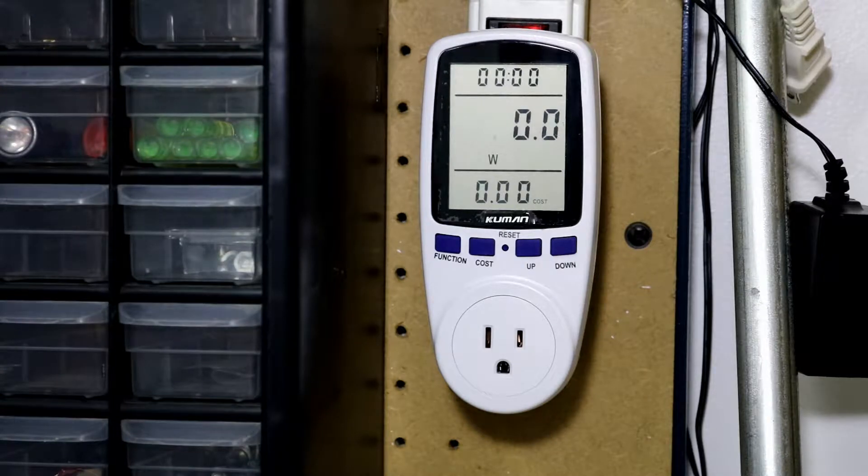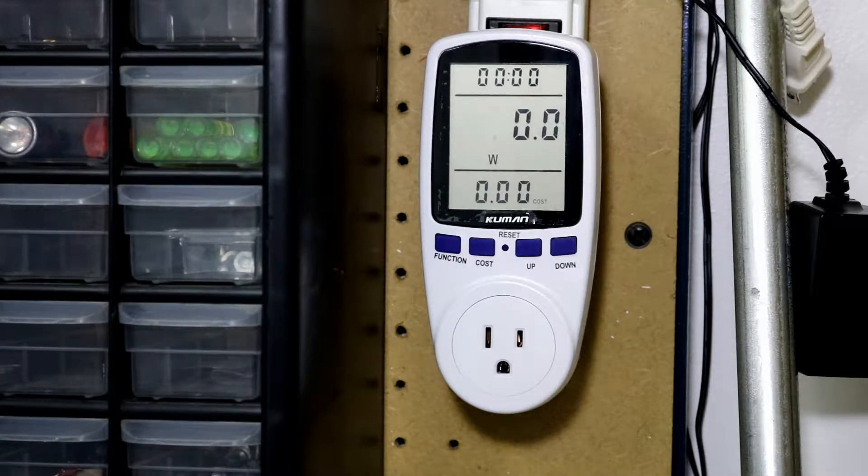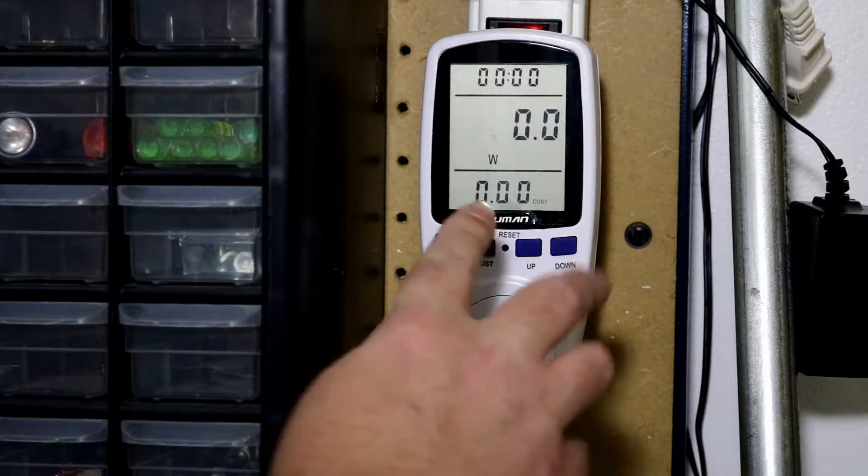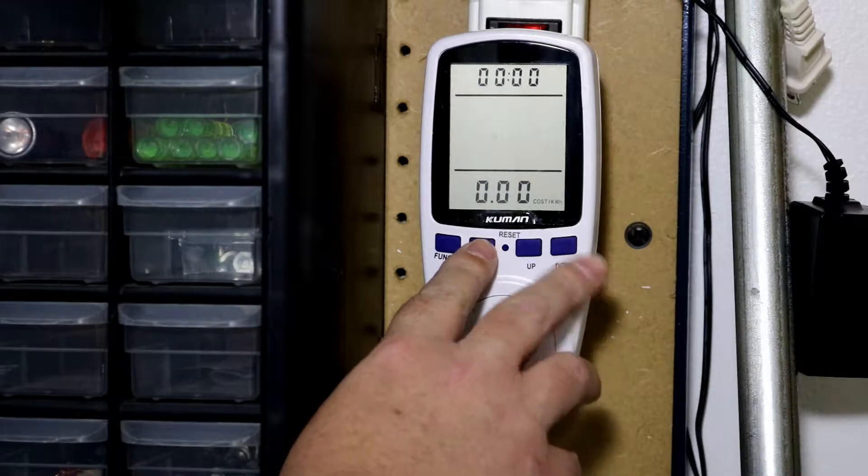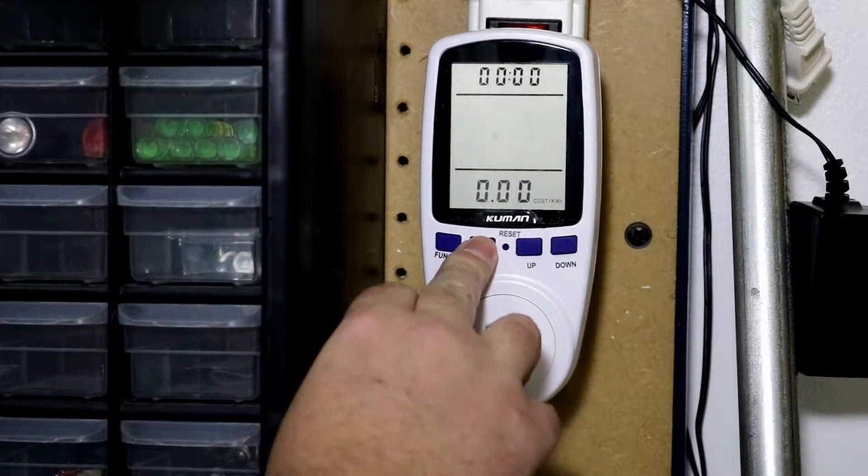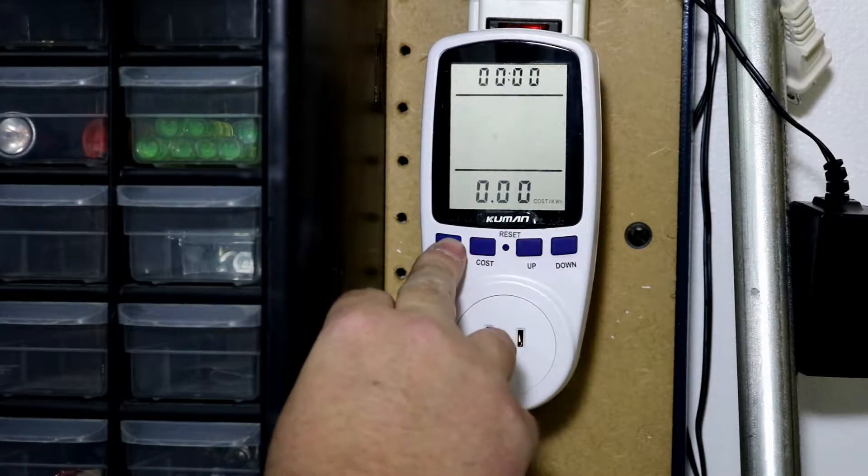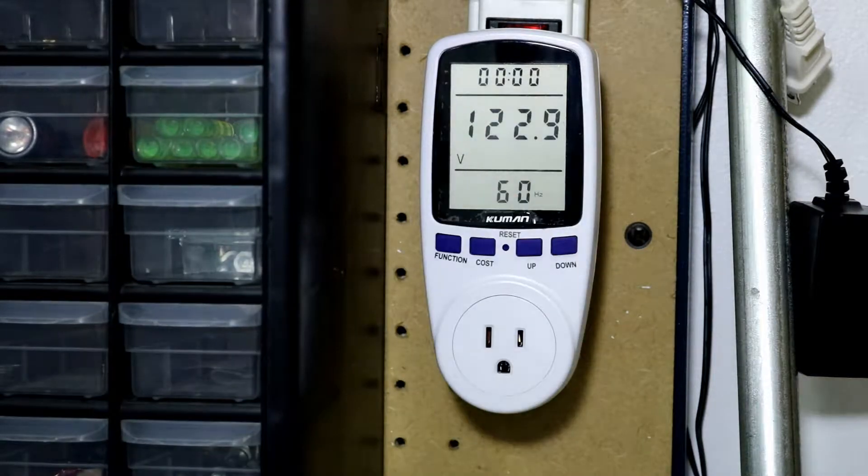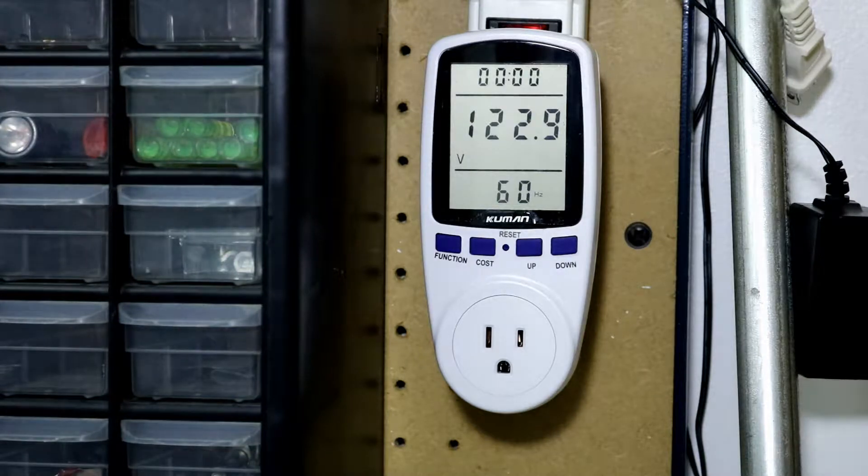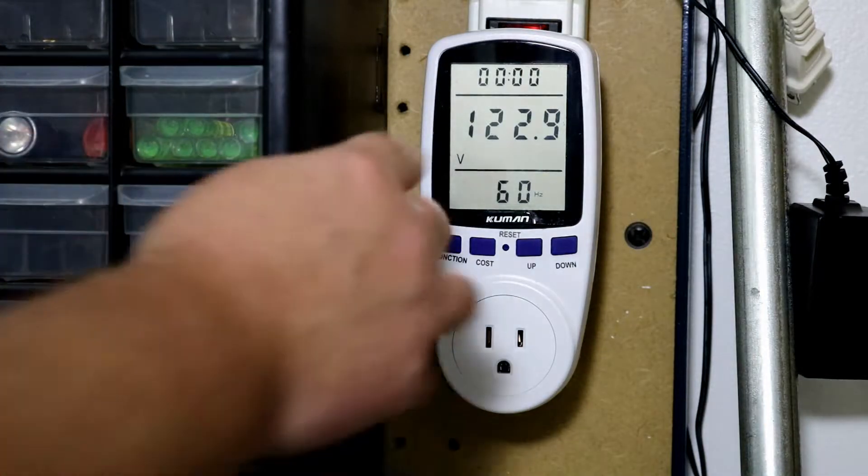So let's go ahead and plug that guy in. The main screen, what does it say here? It really has no instructions on. Let's go to cost. So it is actually reading that there's 122.9 volts coming in. That's pretty sweet.